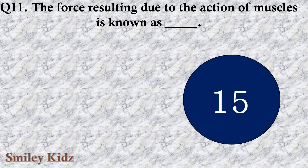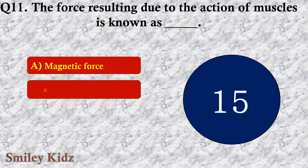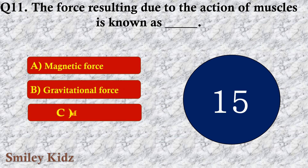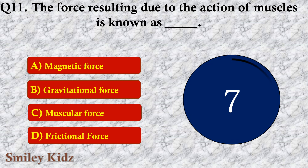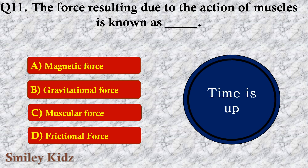Question number eleven: The force resulting due to the action of muscles is known as dash. The options are A. Magnetic force, B. Gravitational force, C. Muscular force, or D. Frictional force. The right answer is option C — Muscular force. The force resulting due to the action of muscles is known as muscular force.